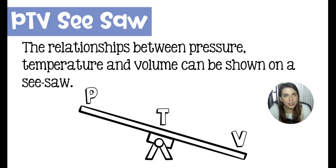There are three properties of gases that work together, and those are pressure, temperature, and volume. If we put those properties on a seesaw and keep temperature in the middle, it'll tell us a lot about how these properties influence each other.